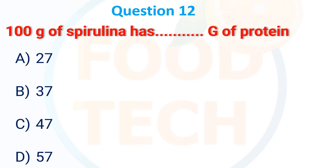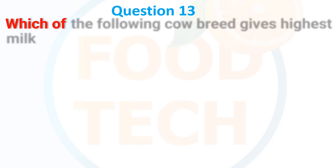Next MCQ: 100 grams of spirulina has how many grams of protein? Options: (A) 27, (B) 37, (C) 47, (D) 57. The correct answer is D — 57 grams of protein.